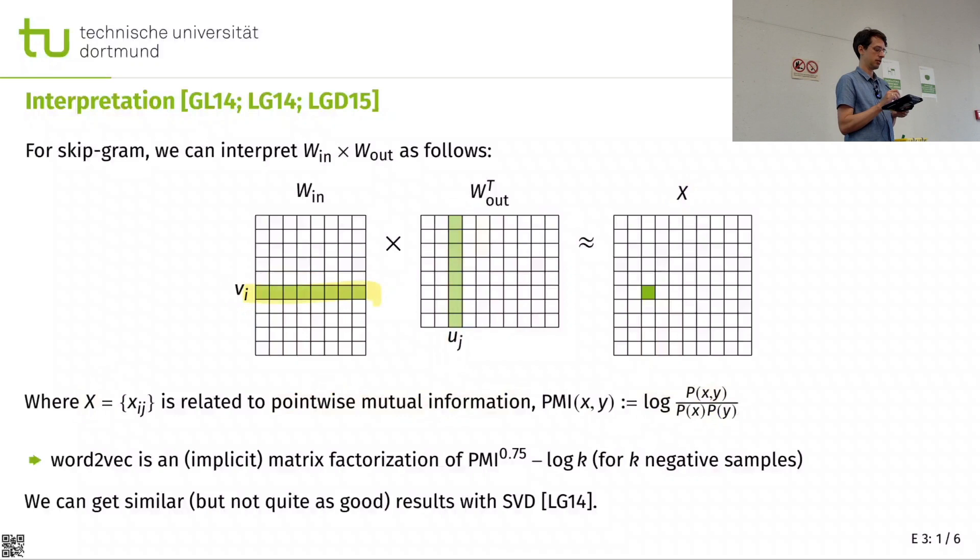So there's this matrix called pointwise mutual information, PMI. That's the logarithm of the two words occurring together, divided by them being randomly drawn. Are they more often neighbors than by chance? Then we get a larger value in here. And that is similar to the matrix X. Now this is a matrix factorization. We're kind of trying to factorize this PMI matrix when we're training word2vec.